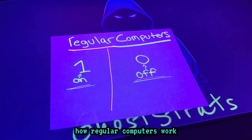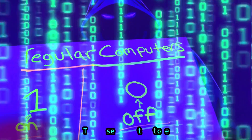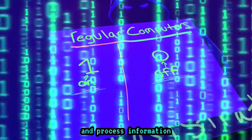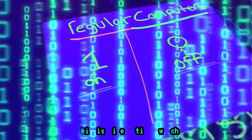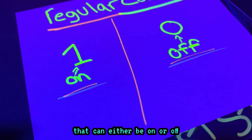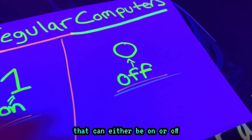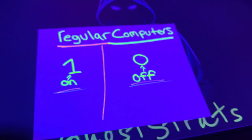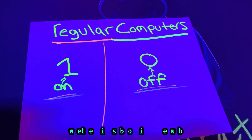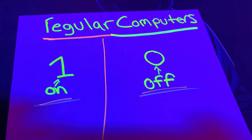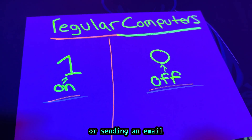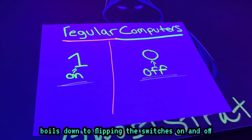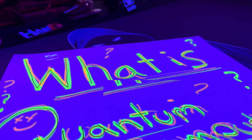You probably know how regular computers work. They use bits to store and process information. A bit is like a tiny switch that can either be on or off, which we call one or zero. Everything a computer does, whether it's browsing the web or sending an email, boils down to flipping those switches on and off.